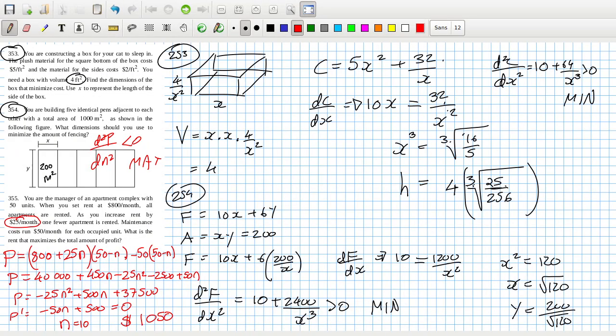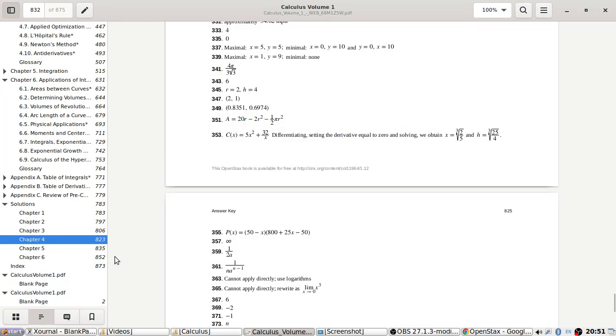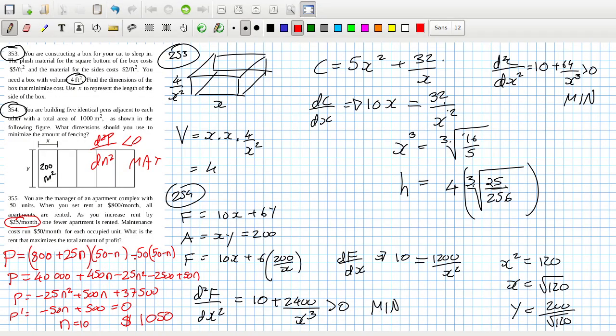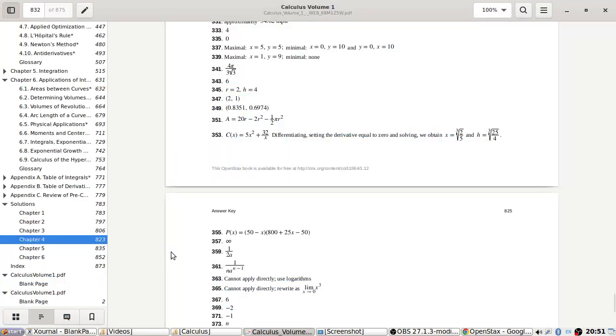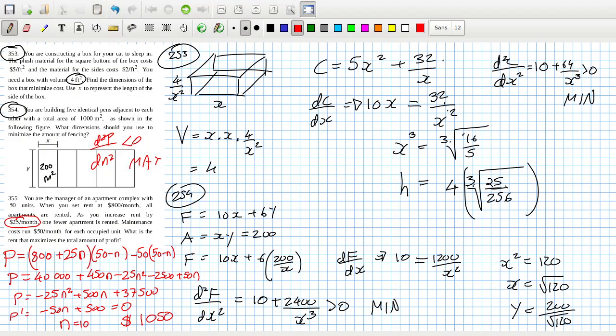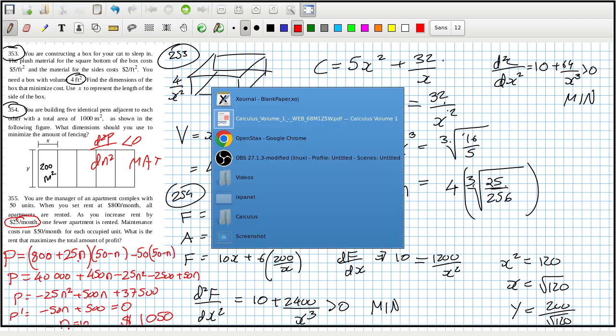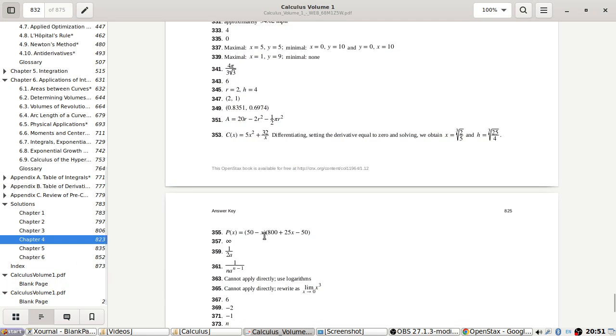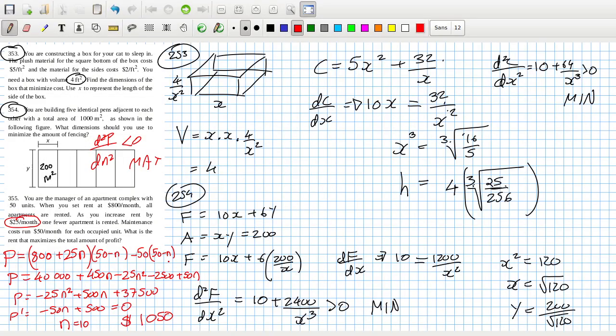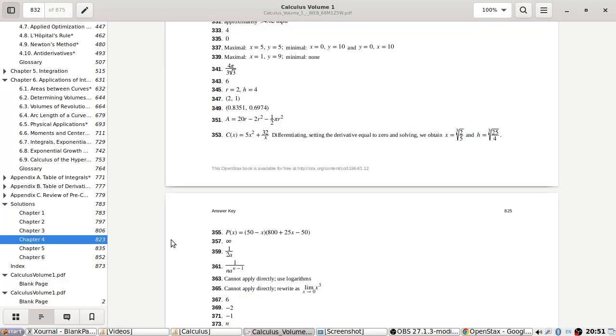50 minus X times 800 plus 25X minus 50. Oh, okay. They put the 50 in here. And I wonder, that would have made the multiplication easier. No, not really. Oh yeah, because you get minus 50. Yeah, it's the same formula. Same formula, but no answer. Answer of 1050 is not at the back. I should open a ticket about that.